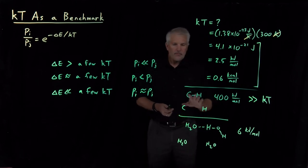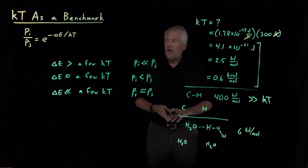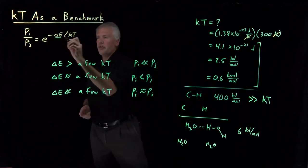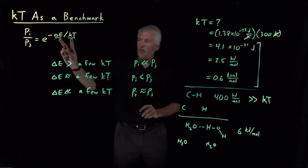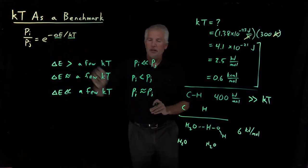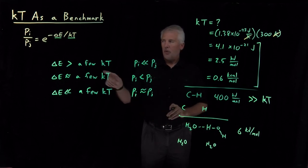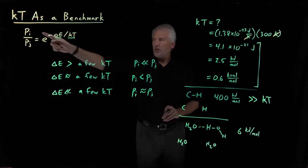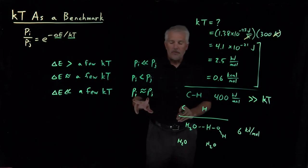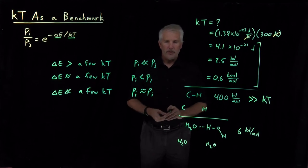This tells us quite broadly that by comparing the size of an energy to kT — because of how energy and kT appear in the exponential of the Boltzmann distribution — we can immediately get at least a qualitative sense, even without much math, about whether two states are roughly the same probability, one is somewhat more probable than the other, or one is so improbable that we can ignore it.